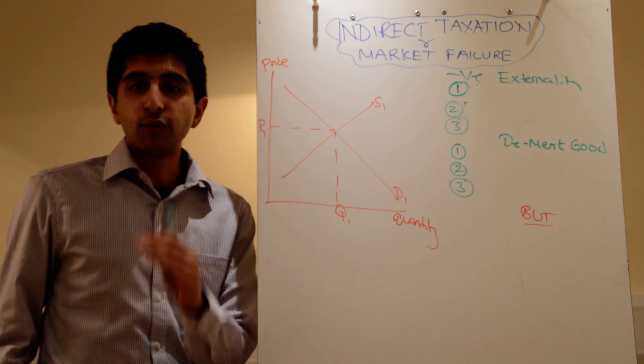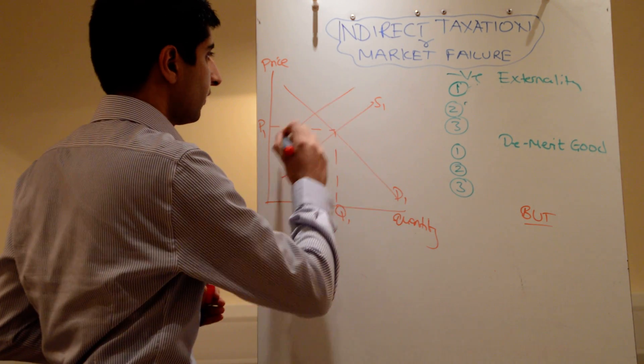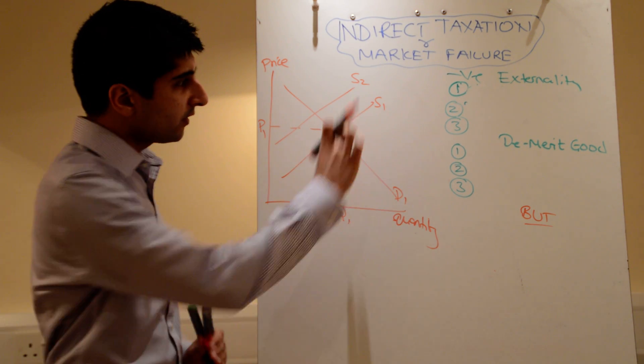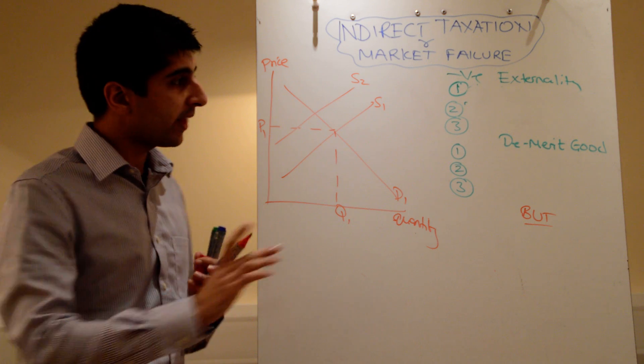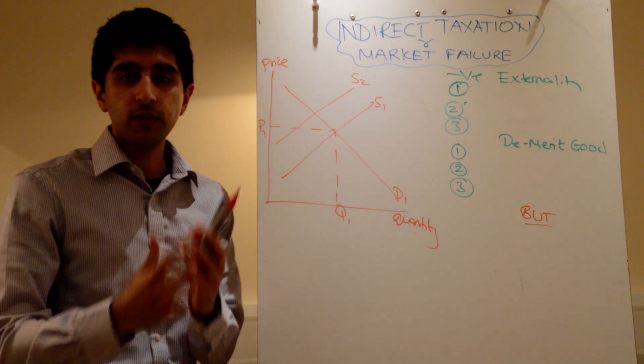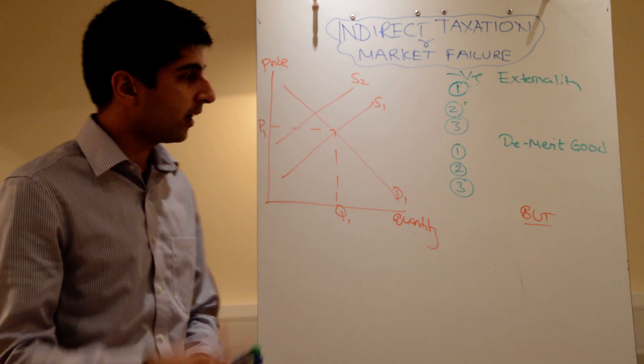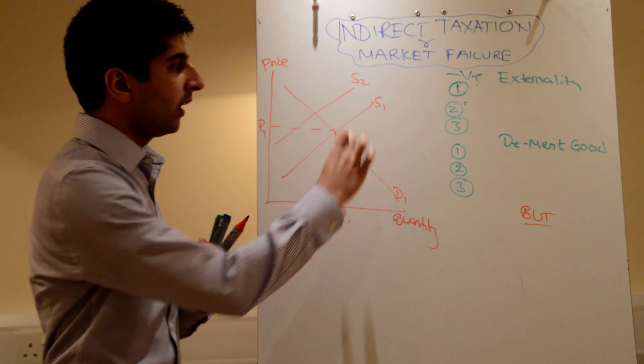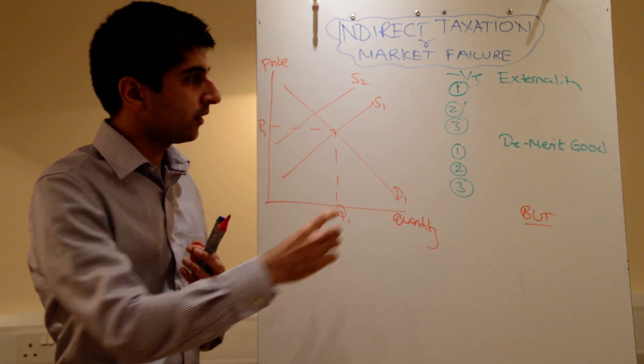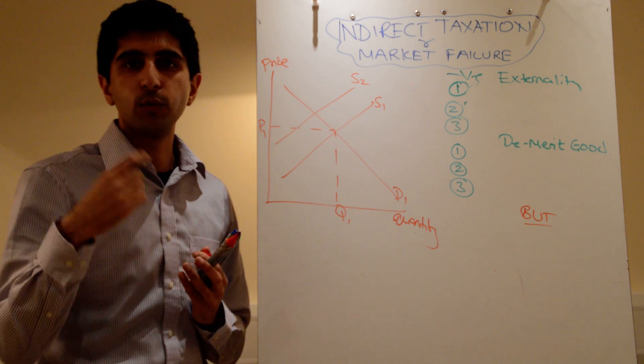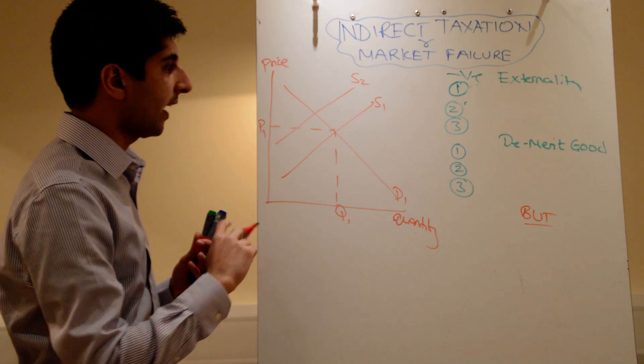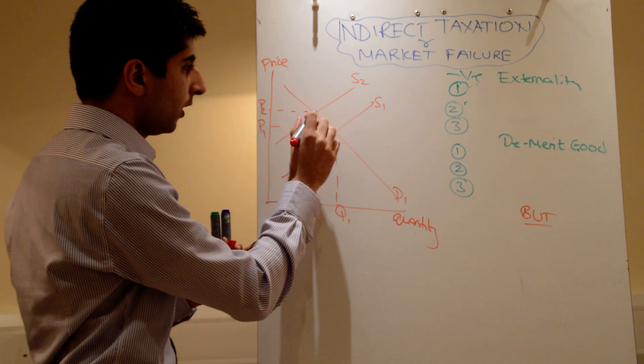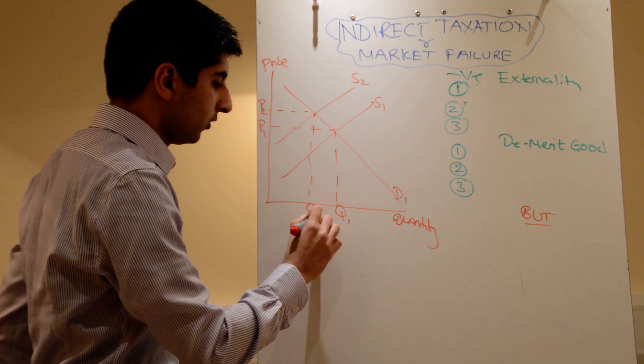Indirect taxes raise the cost of production for firms, which shifts the supply curve upwards. The vertical distance between the two supply curves represents the unit tax. Let's say that's £1 for every bottle of wine, whatever it might be. The vertical distance tells you the tax. So if it was £1 for a bottle of wine, the vertical distance would represent £1. As a result of the tax, supply shifts up, new equilibrium P2Q2.